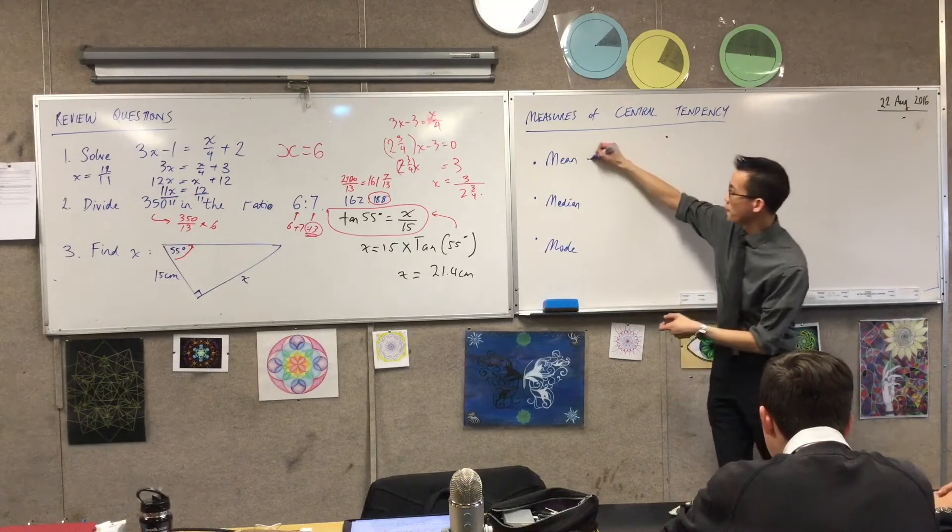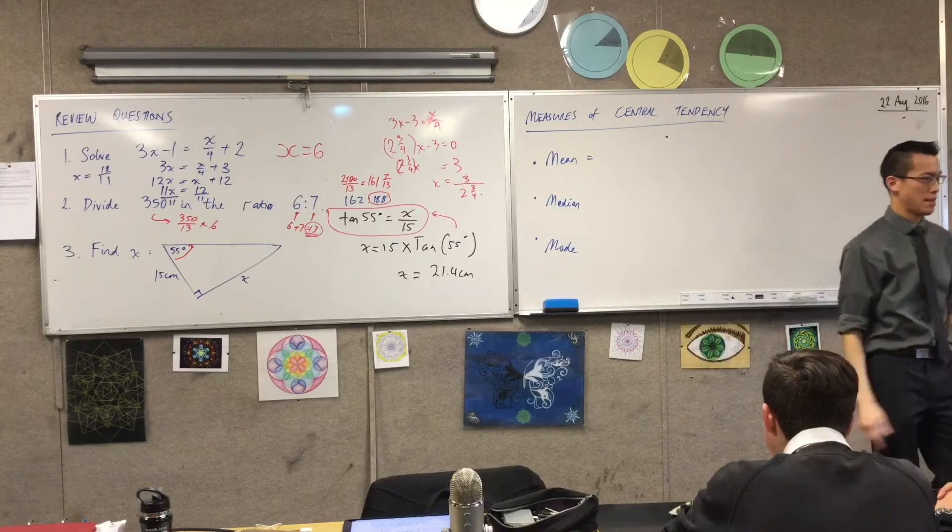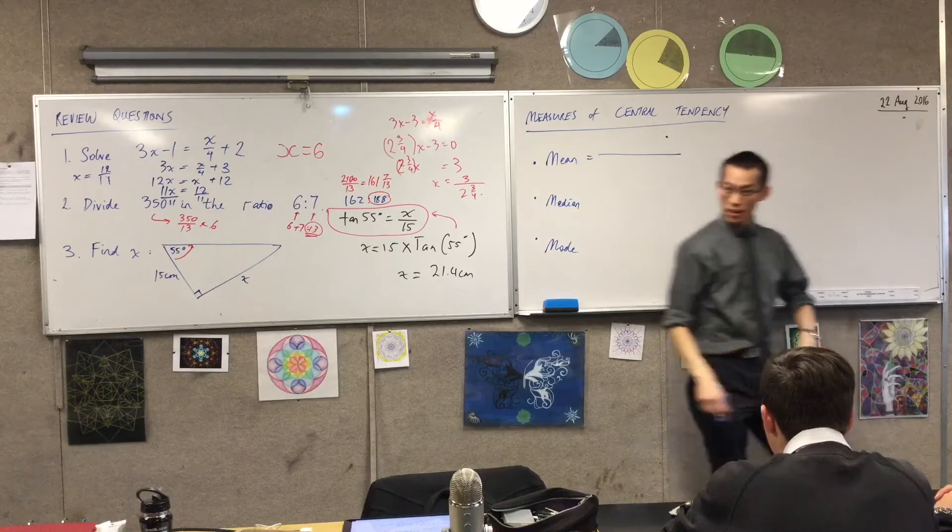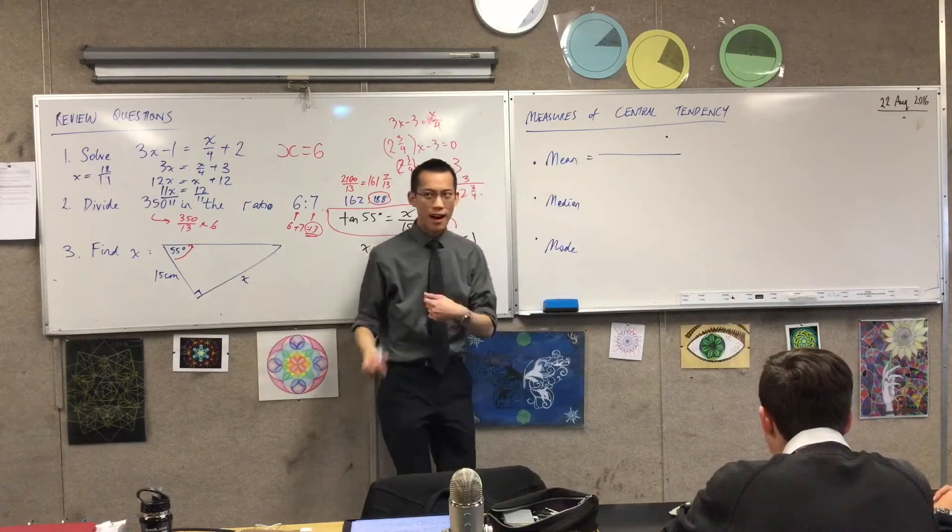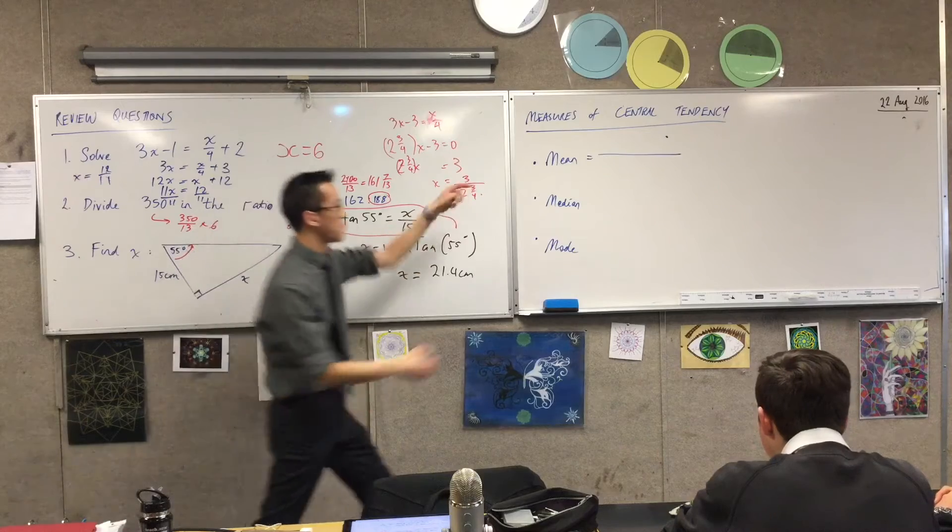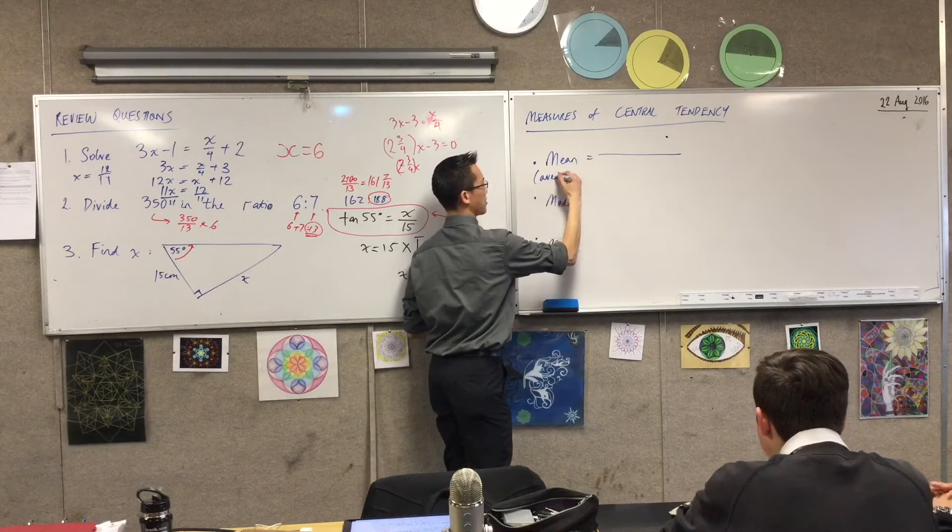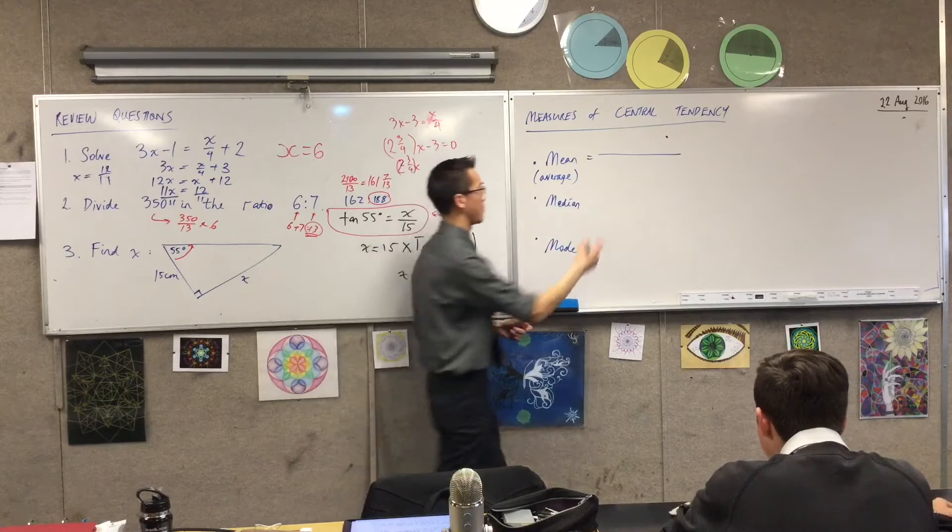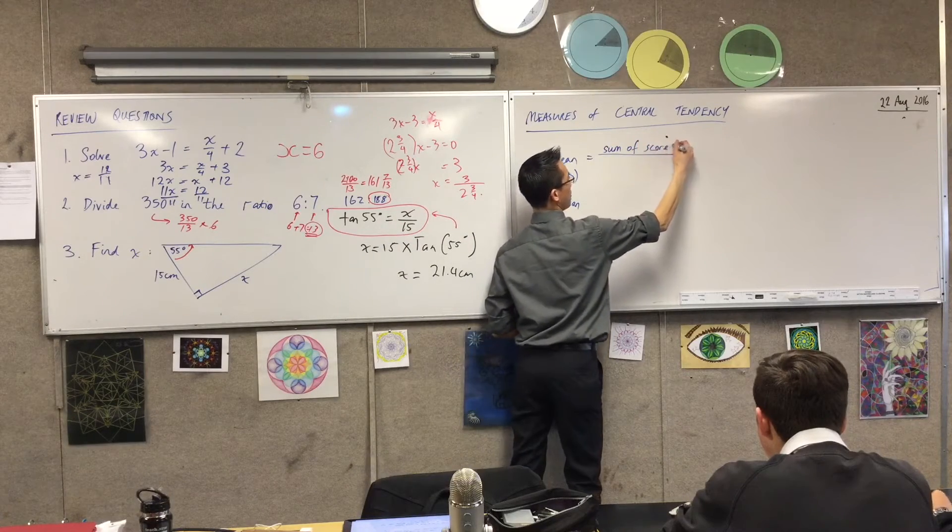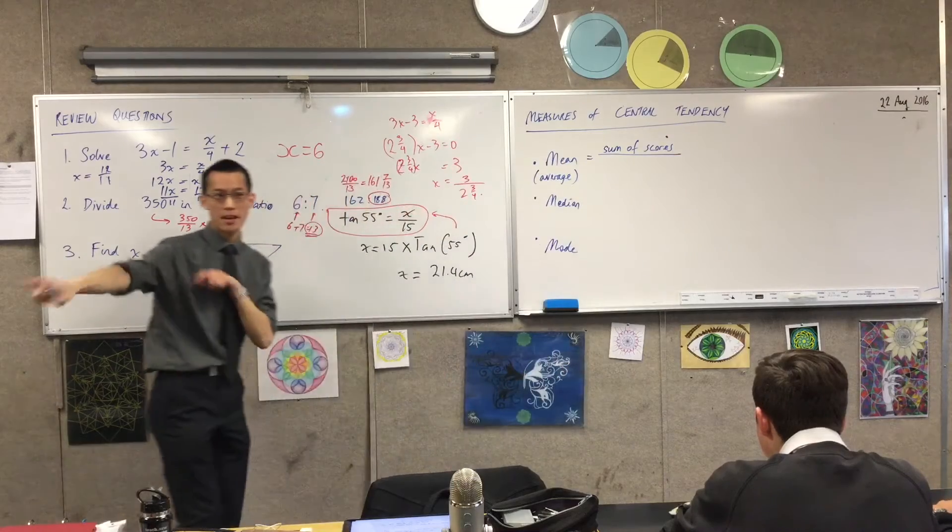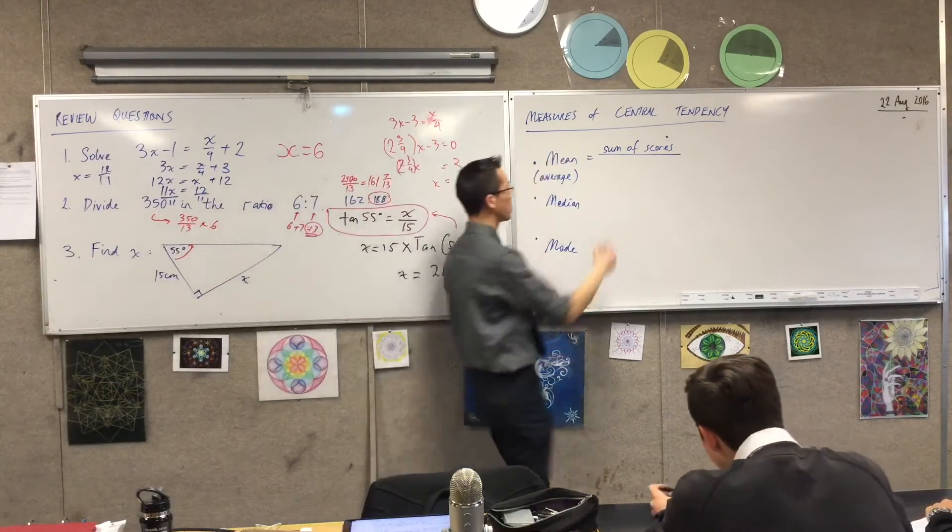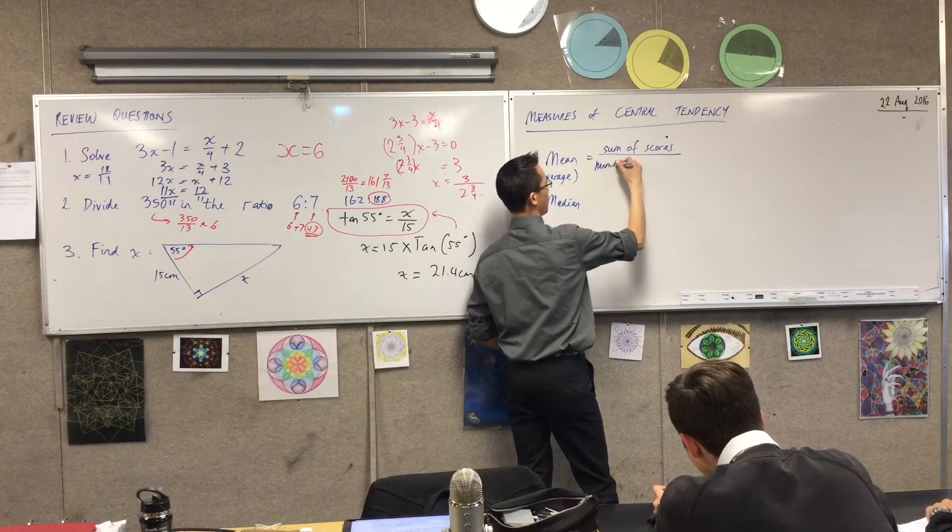So let's remember, for the mean, how do we find the mean? I'll give you a clue. It's a fraction. The mean is also called the average, but the way to find an average is to add up all the scores, so that's the sum. And then the thing you divide by, as Matty mentioned, was how many scores do you have? So it's the sum of the scores divided by the number of scores.